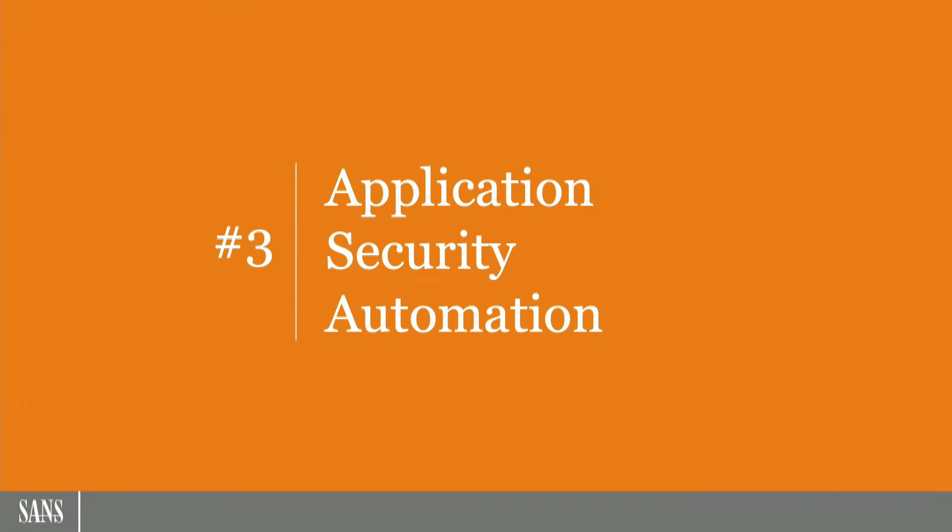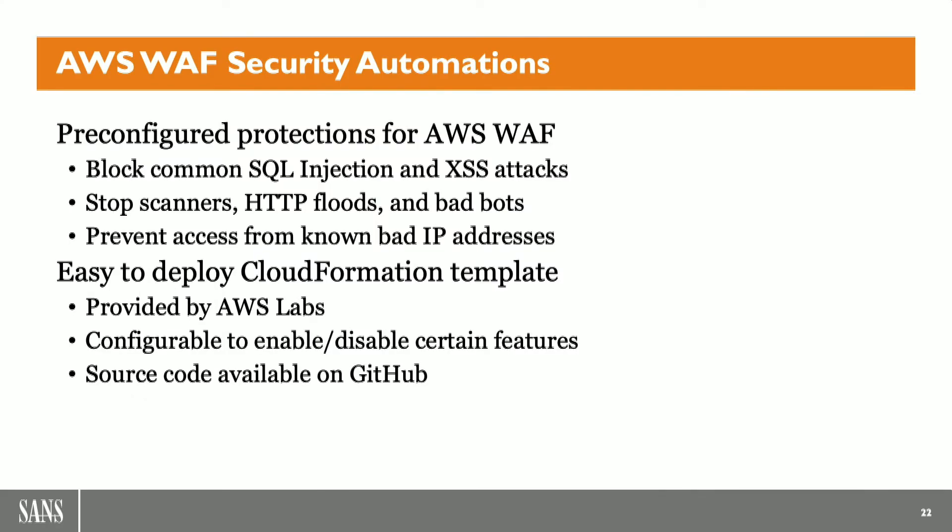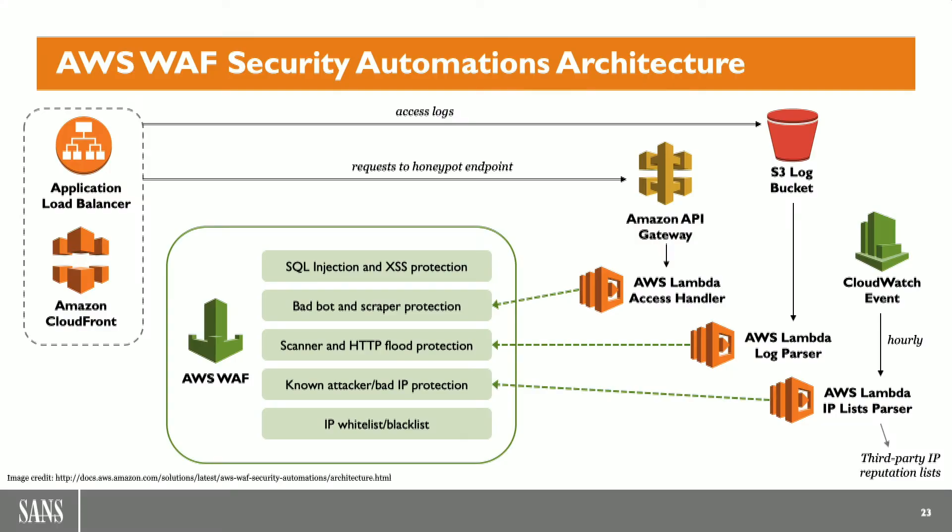The last thing we're going to talk about is application security automation. Specifically, we're going to talk about the WAF — the Web Application Firewall — and look at AWS WAF Security Automations. This particular project is on their GitHub repository, free and open source, and you can deploy the WAF Automations project in your AWS account. It comes with CloudFormation templates and a number of useful security-related features, including blocking SQL injection, cross-site scripting, bad bot and scraper protection, scanner and flood protection, and known bad IP attacker protection.